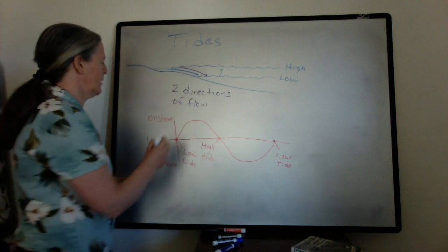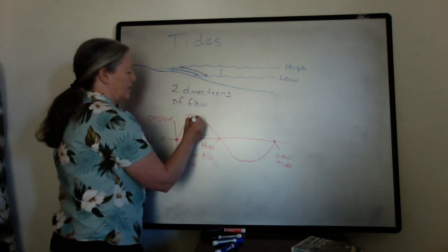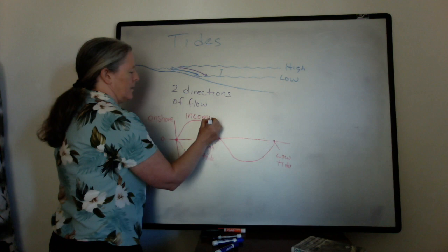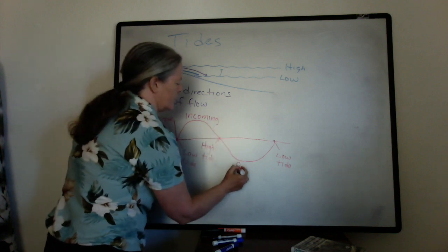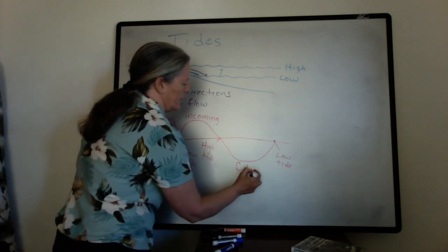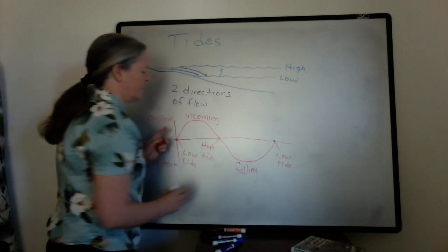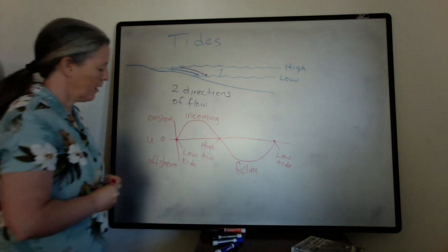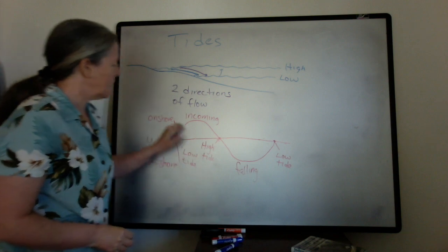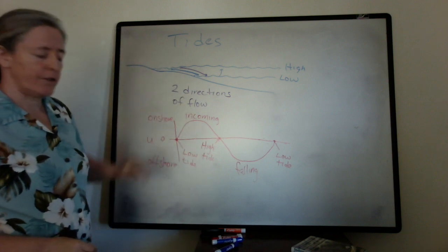So this first set of flow is the incoming tide, and then this would be the falling or outgoing tide. So we have this cycling of flow.